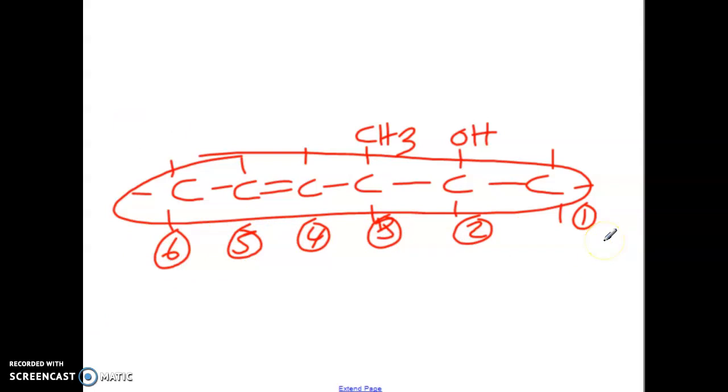We have six carbons. So now we're actually going to come to a situation where we have two different items changing the suffix of this name. We have something that is going to be E-N-E for the double bond, so like hexene for the six.